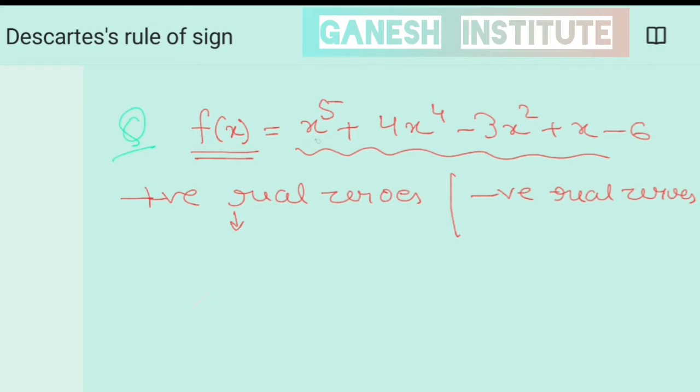Here write out the coefficient with their signs. This is coefficient 1, then plus 4, then minus 3, then plus 1, minus 6, right?